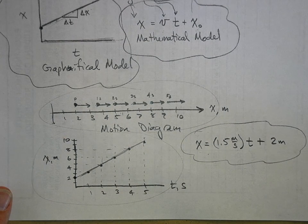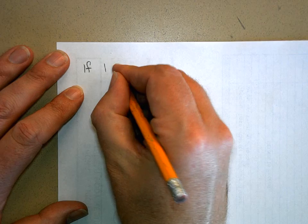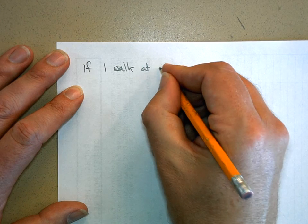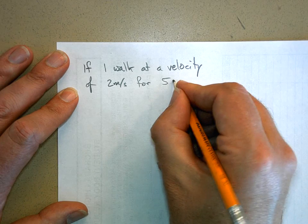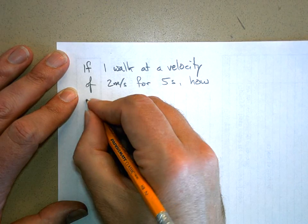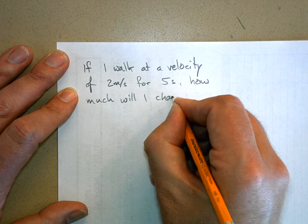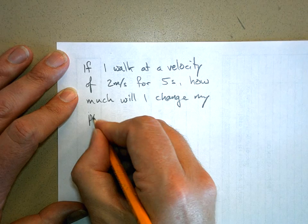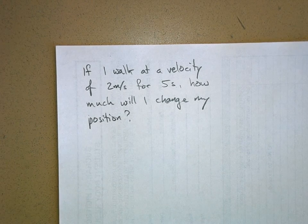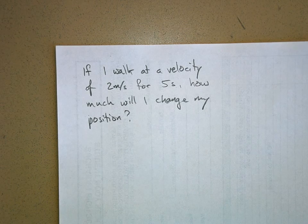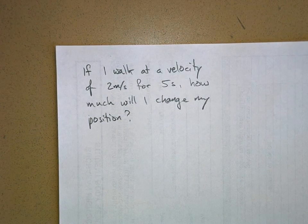Now let's talk about the area underneath a velocity versus time graph. Here's the problem: if I walk at a velocity of 2 meters per second for 5 seconds, how much will I change my position — in other words, how far will I walk in the positive direction? This doesn't require a calculator. If I'm walking 2 meters every second for 5 seconds, I'm going to go 10 meters. That's absolutely right.